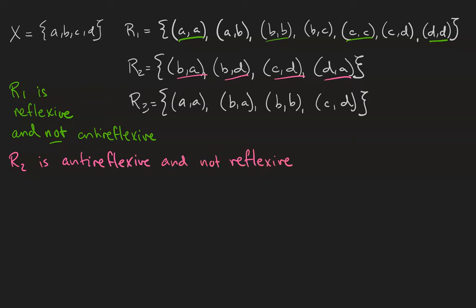R3 relates A to itself, B to A and itself, and C to D. Because R3 contains some of these diagonal pairs, as they're called, but not all of them, R3 is neither reflexive nor antireflexive.